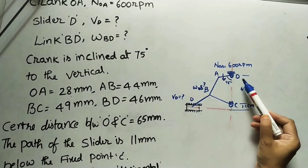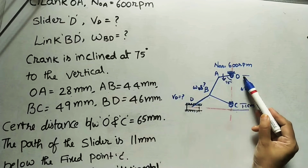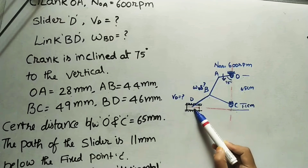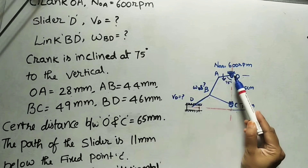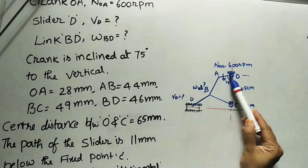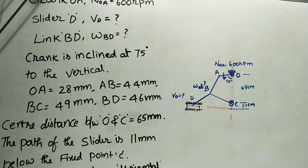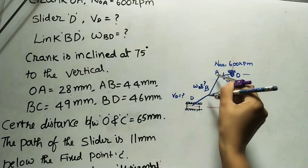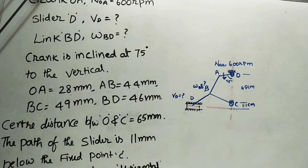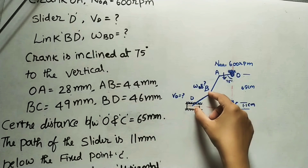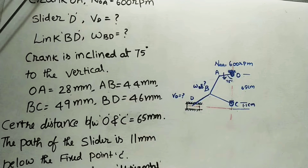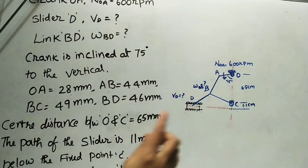According to the given data, I did this diagram. I drew one vertical line, marked the first initial point O. After that, at 6.5 cm, I marked C. After getting point C, I drew a line 1.1 cm down. Then I drew a 75-degree line with the vertical, on which I marked OA as 2.8 cm using a compass. The AB distance is 4.4 cm — using a compass with A as center, I drew one arc. BC is given 49 mm or 4.9 cm, and by taking 4.9 I cut that arc to get point B. BD is 4.6 cm — from B, I drew an arc on the horizontal line to get intersection point D. Joining all points A, B, and D gives this mechanism.